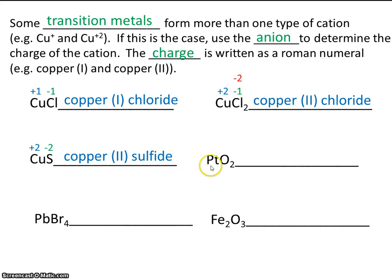Okay, platinum is a transition metal, so we have to say the charge. Oxide has a charge of minus 2, and we have two oxides, so that's a total charge of minus 4. So platinum has to be plus 4. So this is platinum (IV) oxide.